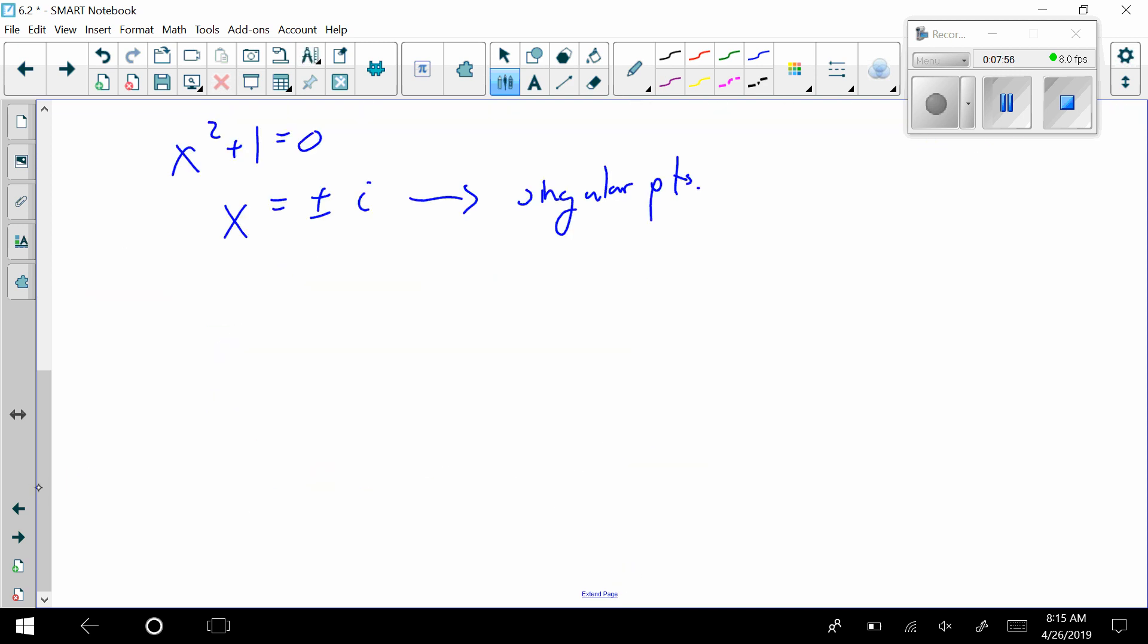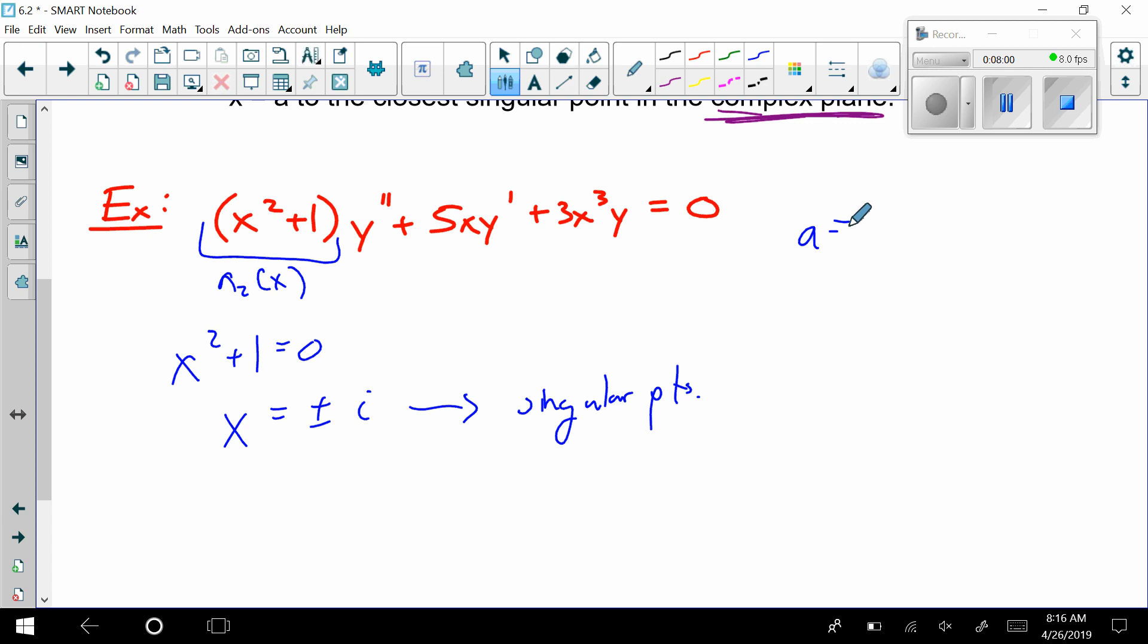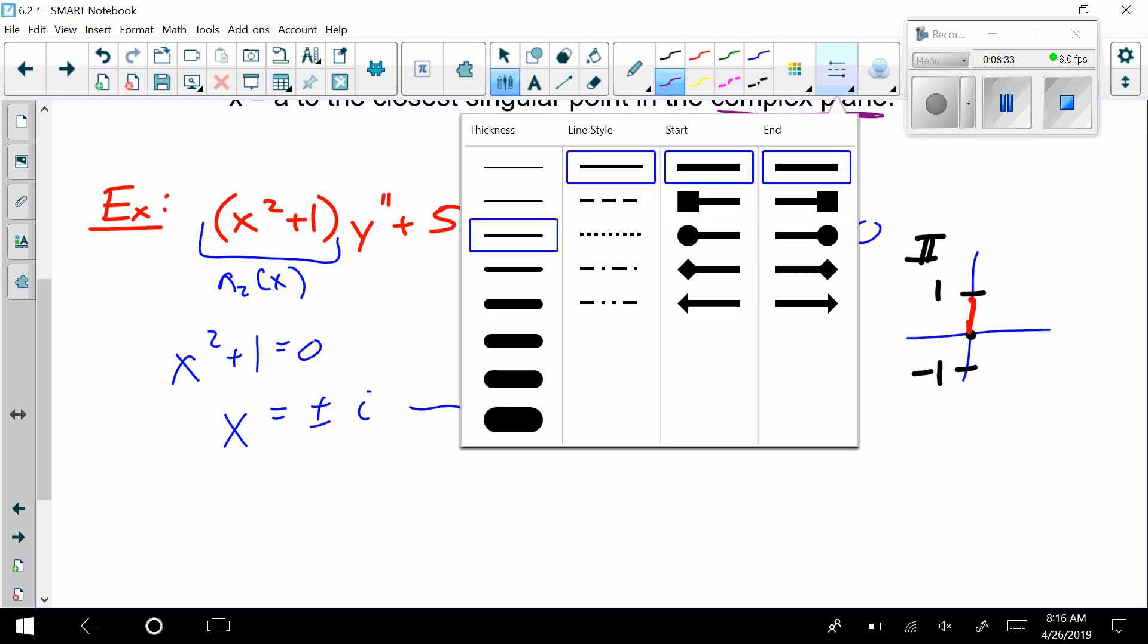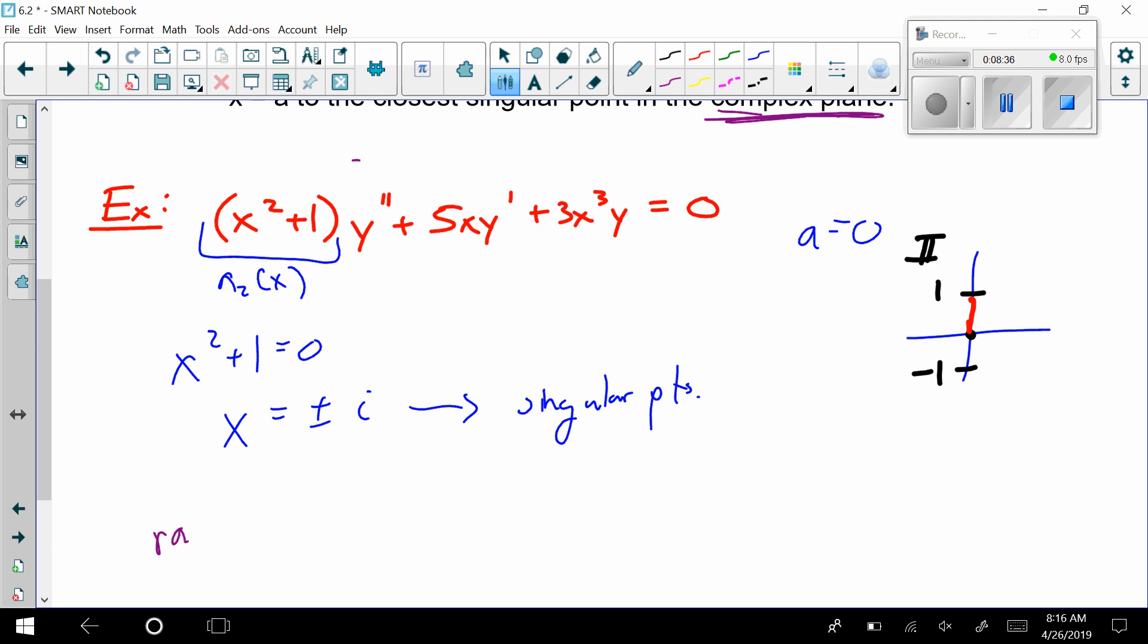Now, the radius of convergence, if I'm centering this at a equals 0, which is very typical for us in this class, what's the shortest distance from 0 to i? Well, plus or minus i, this would be an i, which I shouldn't put an i there because this is the imaginary axis. This is a 1, and then this is a negative 1. Well, the shortest distance from here up to here, either one of those is just 1. So the radius of convergence is 1.